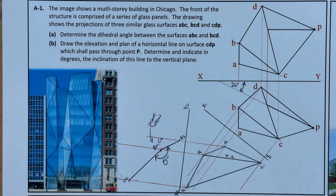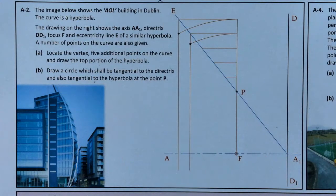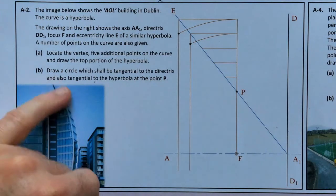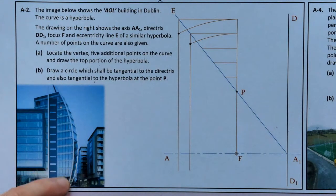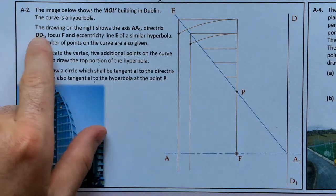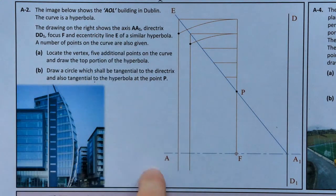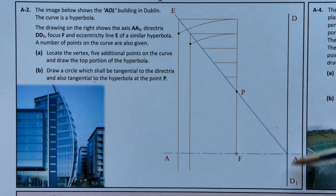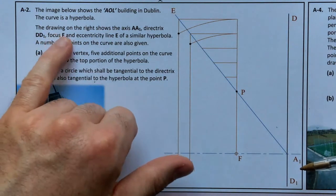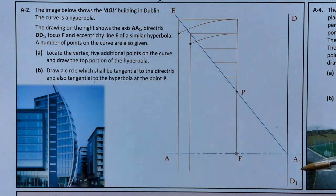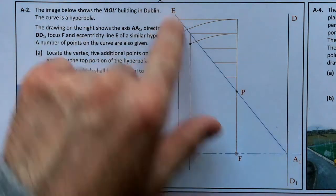Now we're going to zoom in to A2. For A2 it says: the image below shows the AOL building in Dublin. The curve is a hyperbola. The drawing shows the axis AA1, the directrix DD1, focus F, and eccentricity line E. We've got the focus and the line of eccentricity. A number of points on the curve are also given.